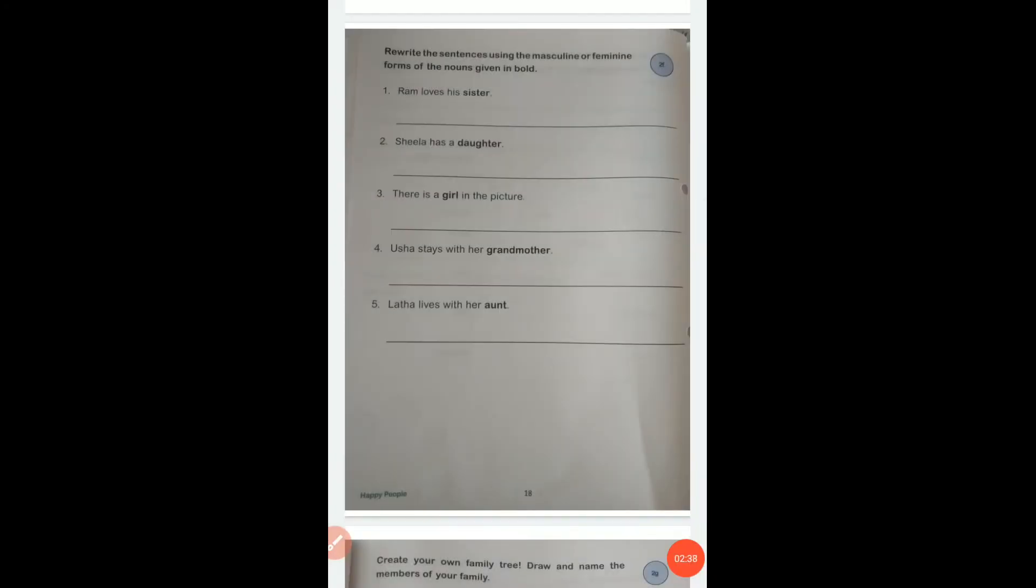Now, page number 18. Rewrite the sentences using masculine or feminine form of the nouns given in bold. What you have to do here is, if the word in bold is feminine, you have to make it masculine, and if it's masculine, make it feminine and rewrite the sentences. For example, Ram loves his sister. Sister is feminine, so you have to change it to masculine. What will come here? Ram loves his brother. Sister's opposite gender is brother.